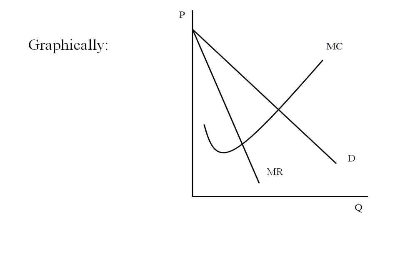So graphically we have a monopolist with the downward sloping demand curve, a downward sloping marginal revenue curve, and an upward sloping marginal cost curve.